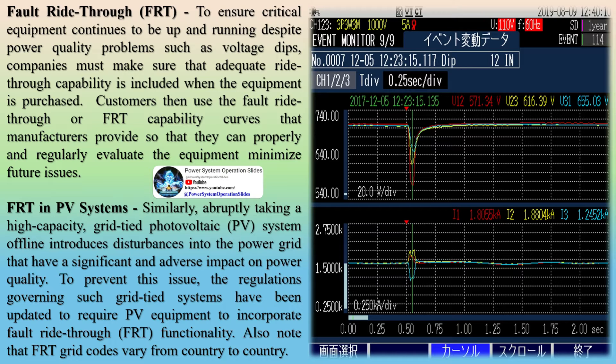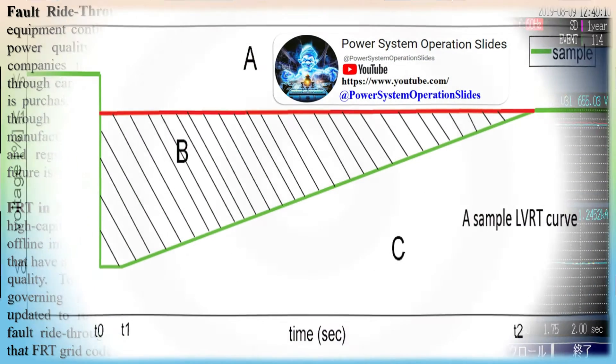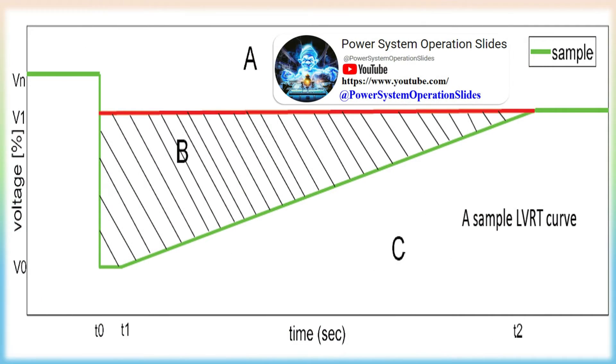FRT is an essential requirement which should be adhered to by generators, which will ensure security and reliability of the power system during grid faults. The increase of low-inertia systems connected to the grid, known as Distributed Energy Resources (DERs) such as solar, wind, fuel cell, and battery systems, makes the power system susceptible to a catastrophic chain reaction in case of a grid fault.